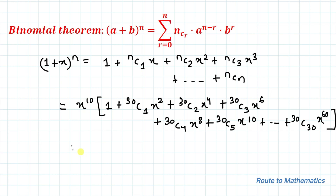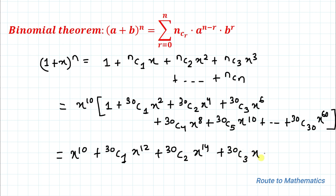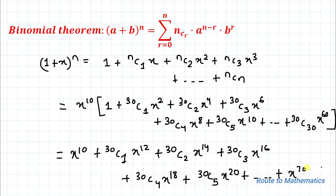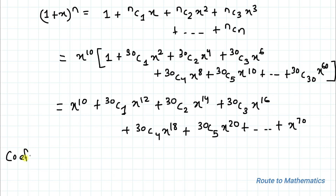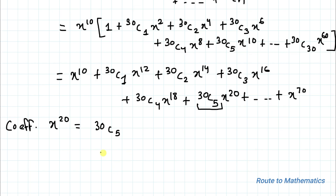Here x^10 is common with each term. Opening the bracket gives: x^10 + 30C1·x^12 + 30C2·x^14 + 30C3·x^16 + 30C4·x^18 + 30C5·x^20 + … up to x^70. We are asked to find the coefficient of x^20. You can see that the coefficient of x^20 is 30C5. Using the identity nCr = nC(n−r), we can also write this as 30C25. So the answer is 30C5 = 30C25.